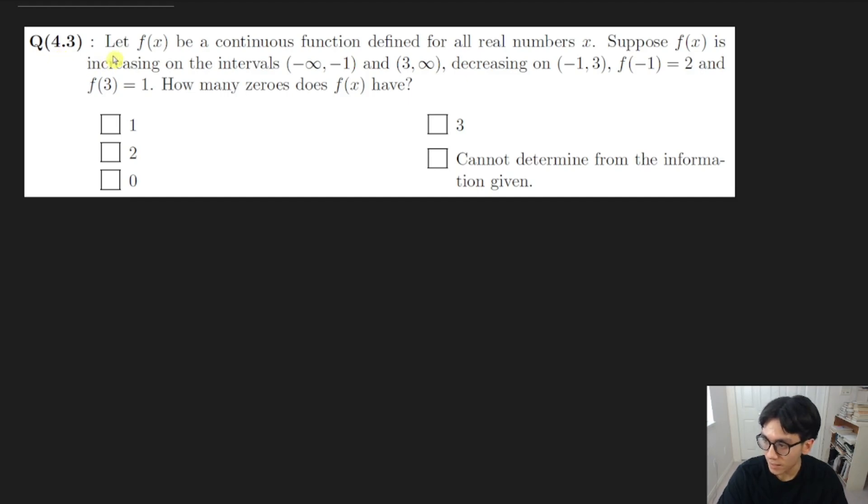You can see it says let f of x be a continuous function defined for all real numbers x. Suppose f is increasing on the intervals negative infinity to negative 1 and 3 to infinity, decreasing on negative 1 to 3, and it has the property that f of negative 1 is 2 and f of 3 is 1. And we're asked to figure out how many zeros f of x have.